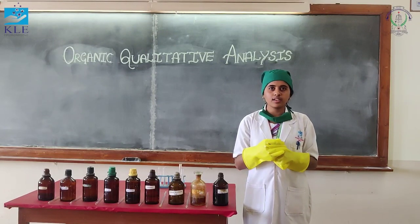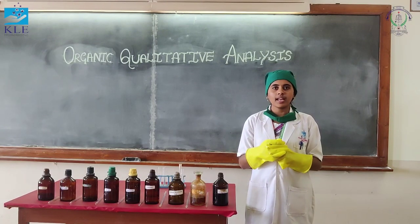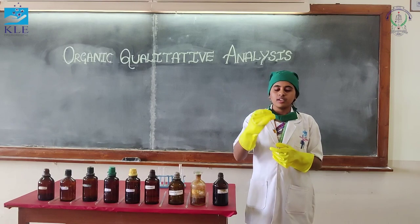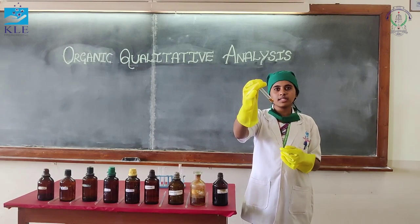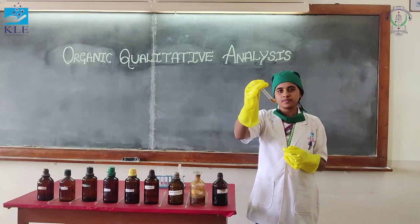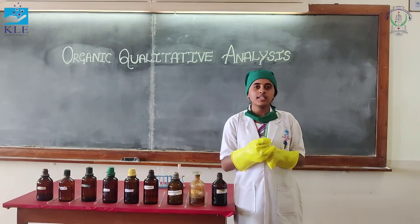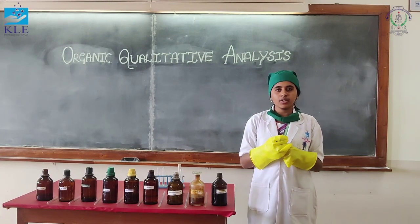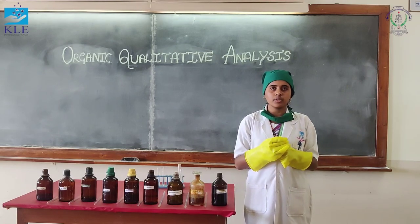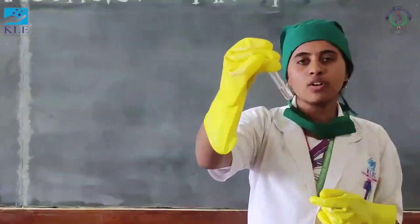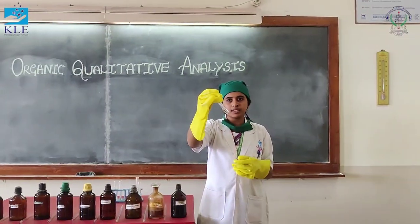The second elemental test is the test for sulfur. Take the stock solution and add sodium nitroprusside to it. We have not obtained any pink color, which means that sulfur is absent. The third test is the test for halogen. Take the stock solution and add dilute HNO3 and AgNO3 to it. We have not obtained any precipitate, which means that halogen is absent.